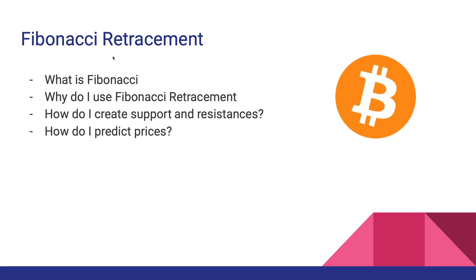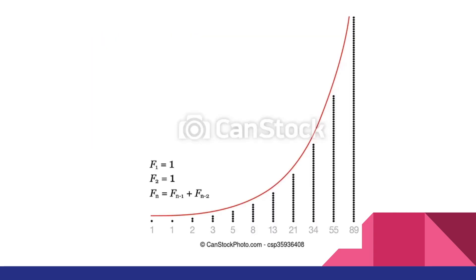So let's start first with what is Fibonacci. Basically, Fibonacci is a sequence of numbers. It's actually calculated by the previous two numbers following this formula. Pero since ang habol naman natin dito is technical analysis at hindi yung mismong formulas niya, i-summarize na lang natin siya. Basically, pag-sum-up mo lahat ang Fibonacci sequences, magpo-form ka ng isang parabolic chart.